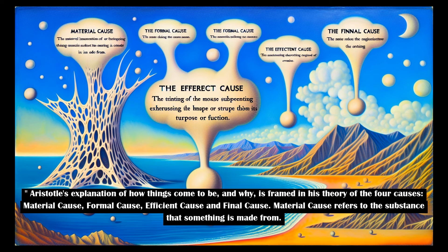Aristotle's explanation of how things come to be, and why, is framed in his theory of the four causes: material cause, formal cause, efficient cause, and final cause.